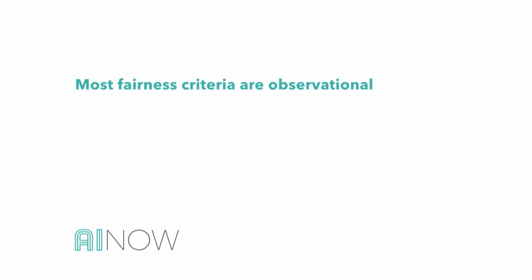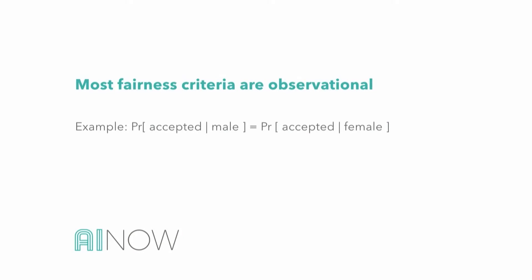The starting point for my talk is the insight that most fairness criteria discussed in recent years are what I call observational. An example of an observational criterion is something like: the fraction of accepted men should be equal to the fraction of accepted women — the rate of acceptance by some classifier should be the same across these two groups. That's observational, meaning you can write it as a probability involving only the sensitive attribute, the predictor, and some other variables.